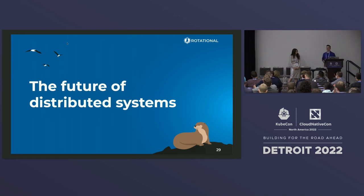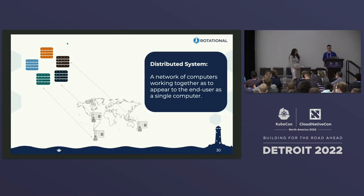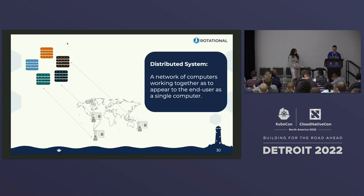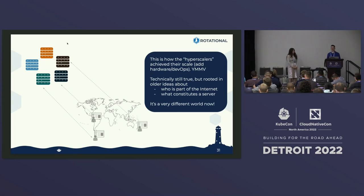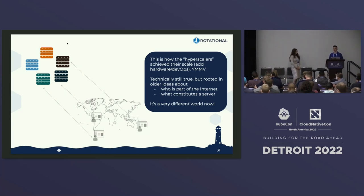Now let's talk about what we think the future of distributed systems is going to be. Rebecca's classical definition: a network of computers working together to appear to the end user as a single computer. But if we think about how the internet has changed — more people on phones, more users who weren't on the internet ten years ago, servers that are smaller and more mobile — maybe we need a new definition rather than this monolithic archetype.